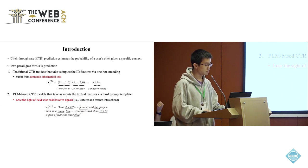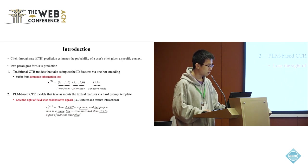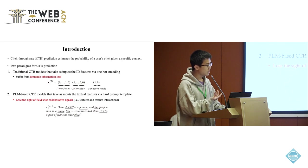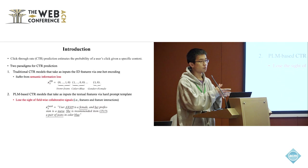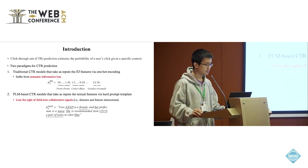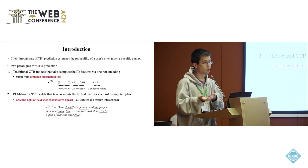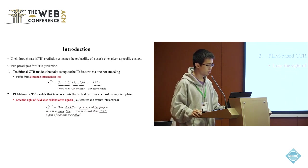In this way, we can preserve the semantic meanings of the features, but these models can fail to lose sight of field-wise collaborative signals. For example, the user ID AX529 should be a unified one feature ID for the model, but during language tokenization, it can be tokenized into A, X, 5, and 29—four meaningless tokens for the language model to understand.